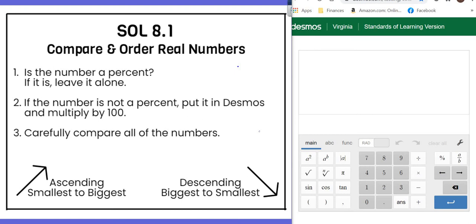Step number one, you ask yourself, is the number a percent? How do you tell? Well, if it has a percent sign, it's a percent. If that's the way it is, leave it alone. If the number is not a percent, you want to put it into Desmos and multiply it by 100 to make it a percent, because it's a lot easier to compare those numbers. Remember the word ascending means you're starting with the smallest and going to the biggest. And descending means that you are starting with the biggest and going to the smallest.